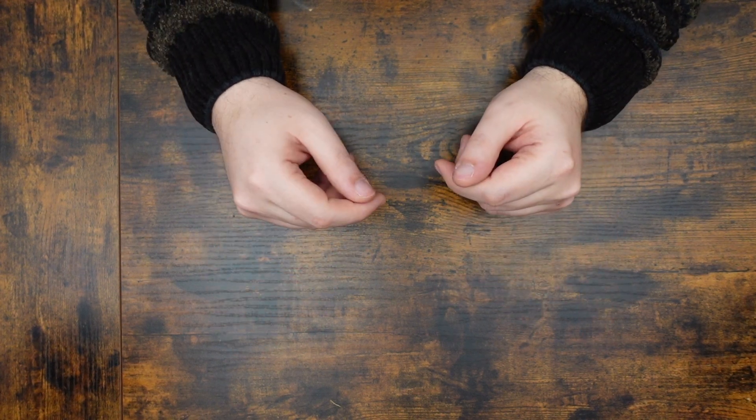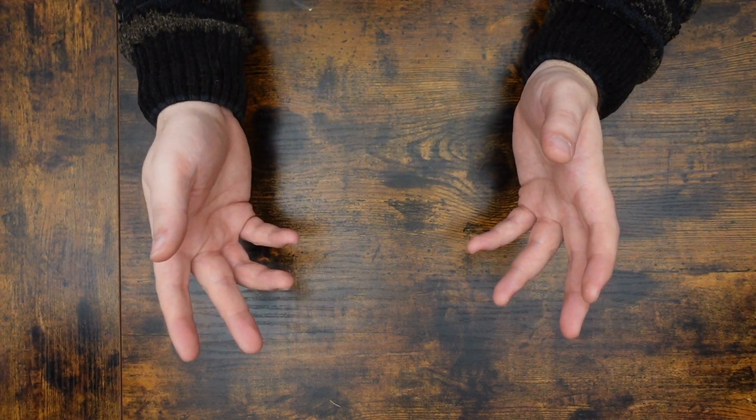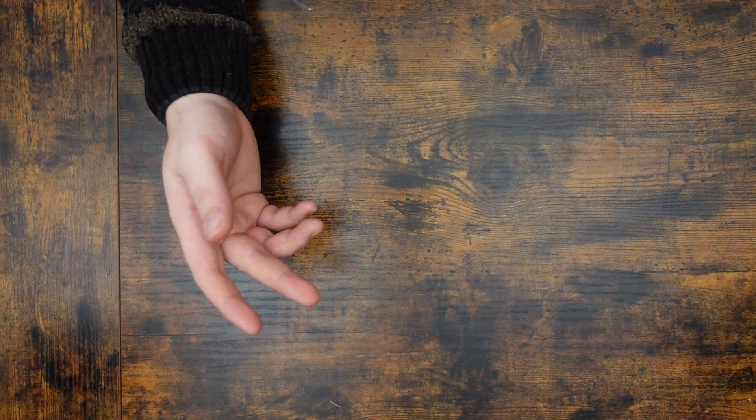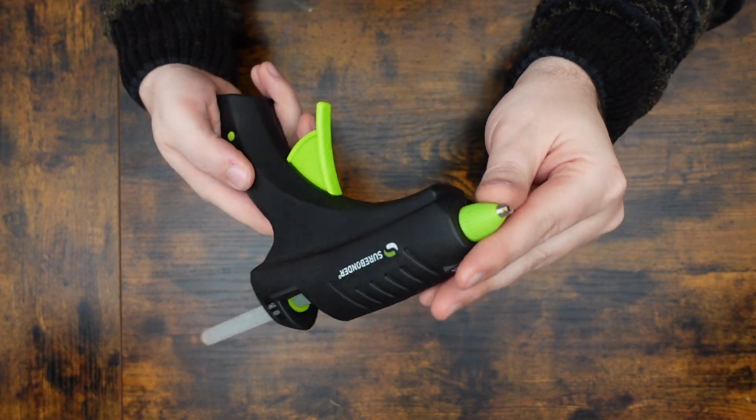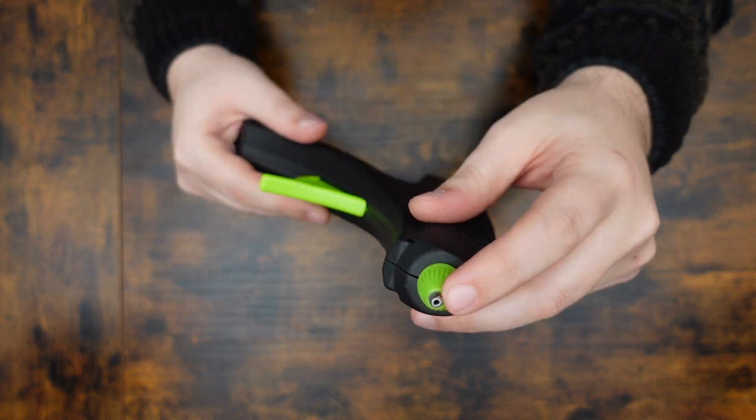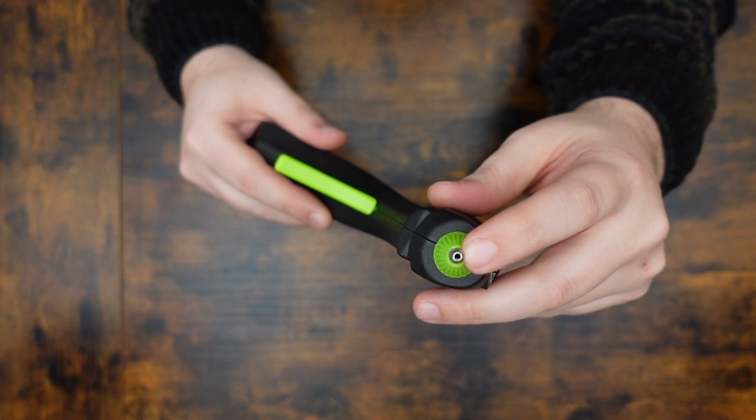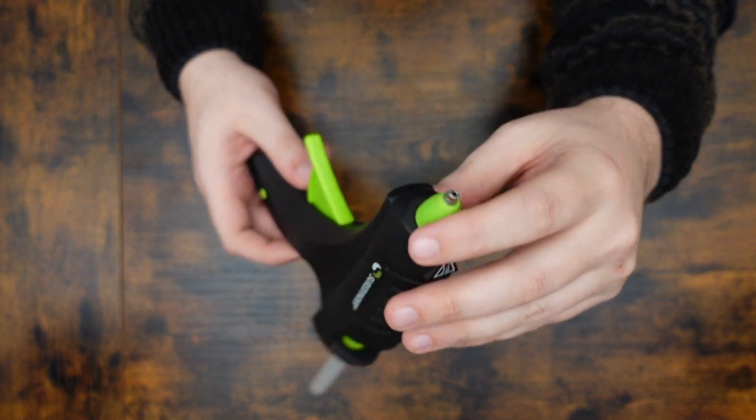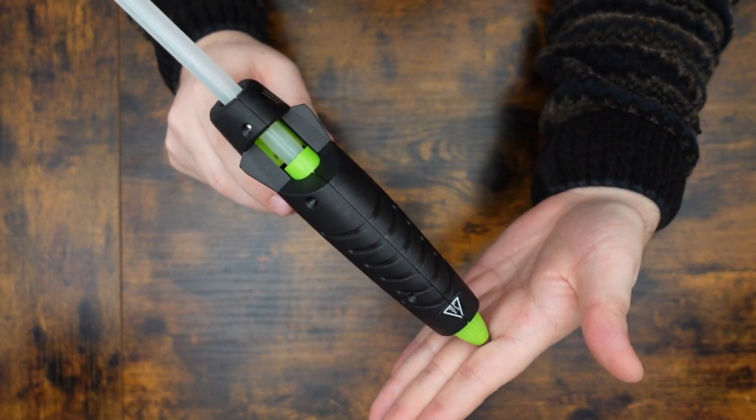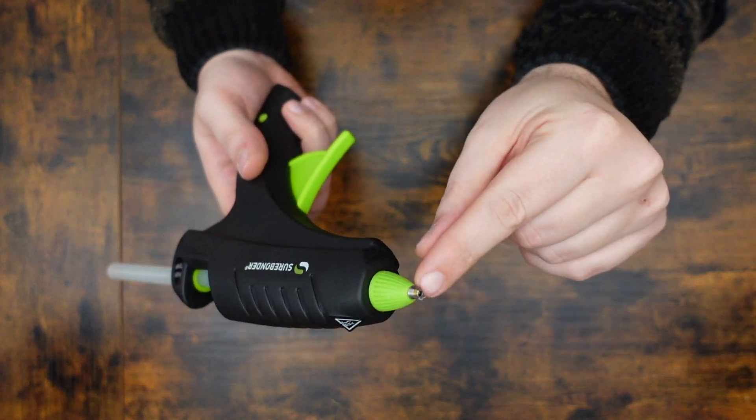The first thing to keep in mind is that 3D printing is essentially a robotically controlled hot glue gun. You've got some sort of thermoplastic that's melted and pushed through a nozzle, and that nozzle has some specified diameter to it. It's very difficult, although not entirely impossible, to print a line that is thinner than that hole.